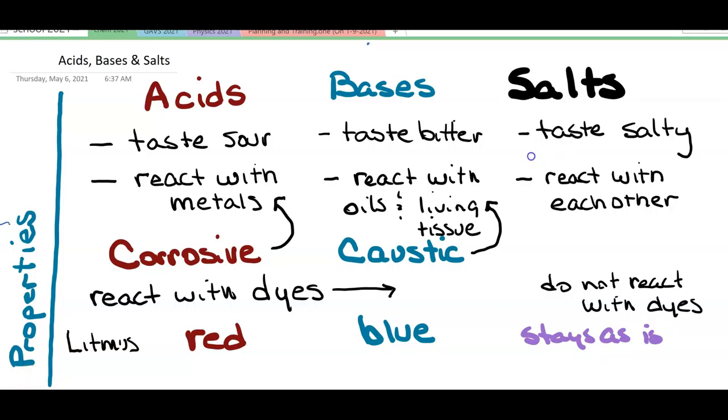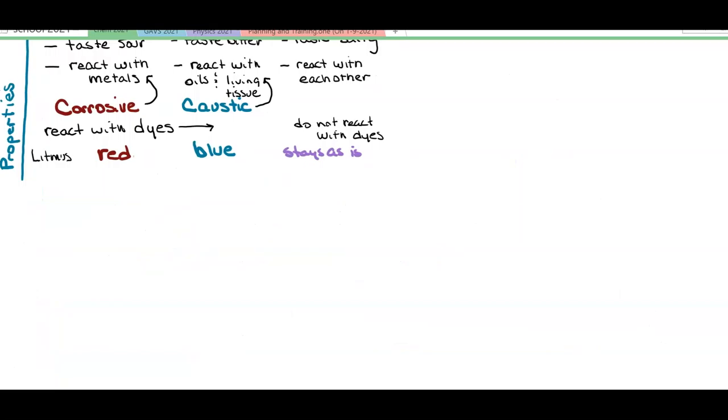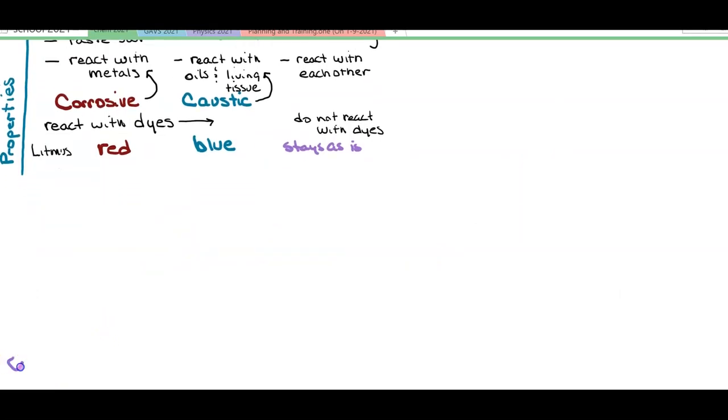So as our chemical understanding grew, we started to be able to attribute the chemical behavior of these materials, and explain why they had these properties. One of the first things we looked at was how they act as electrolytes.